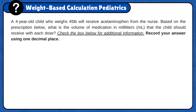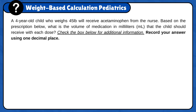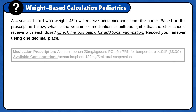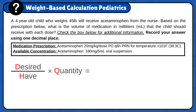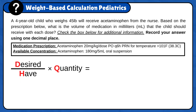A 4-year-old child who weighs 45 pounds will receive acetaminophen from the nurse. Based on the prescription below, what is the volume of medication in milliliters that the child should receive with each dose? Check the box below for additional information. Record your answer using one decimal place. First, set up the formula: desired over half times quantity. Use the memory trick to remember it.